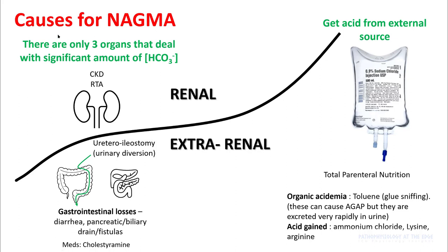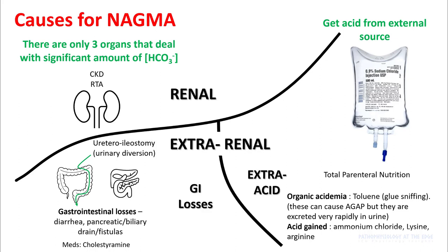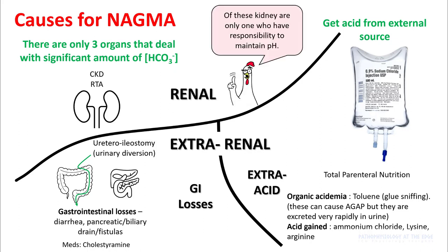A better way to divide non-anion gap acidosis is to divide between renal and extra-renal causes. Extra-renal can be divided into GI losses and extra acids. Of these, kidneys are the only ones with responsibility to maintain your pH.